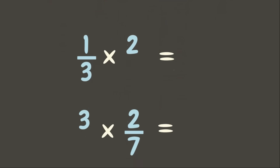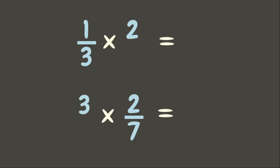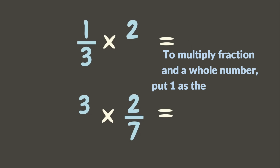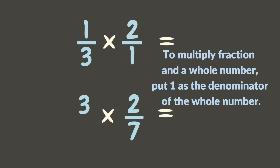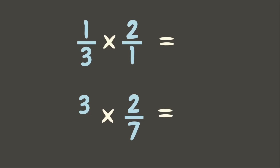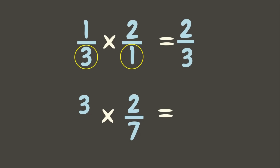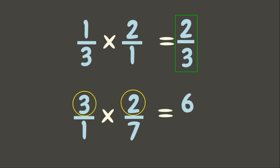Now let's multiply a fraction by a whole number. In multiplying a fraction and a whole number, we put 1 as the denominator of the whole number and then simply multiply them. 1 times 2 is 2, and 3 times 1 is 3, giving us 2 thirds. Let's have another example: 3 times 2 sevenths. Put 1 as the denominator of 3, then multiply: 3 times 2 is 6, and 1 times 7 is 7. Since it is already in its simplest form, 6 sevenths is our final answer.